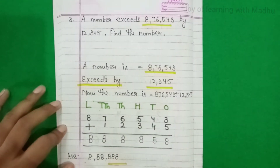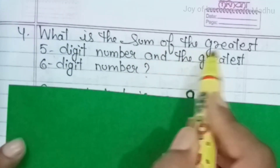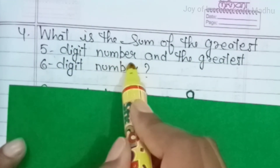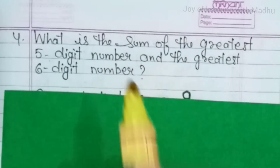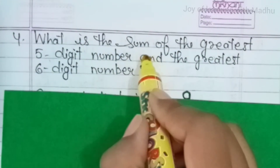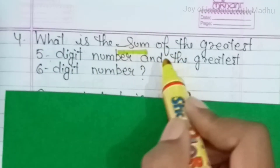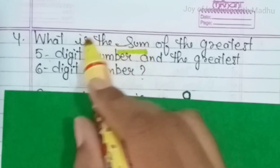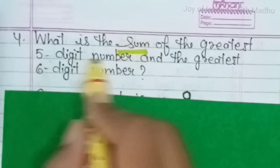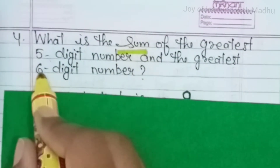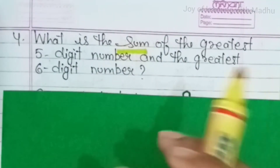Come to the next. Our next question is: What is the sum of the greatest 5-digit number and the greatest 6-digit number? Sum क्या होता है — ये total का keyword है। हमें greatest 5-digit number और greatest 6-digit number का sum बताना है।